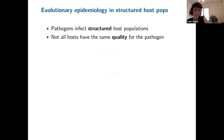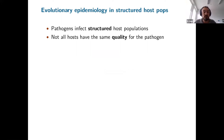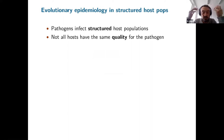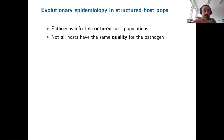My main motivation, because I'm interested in models of host-pathogen interactions and evolutionary epidemiology, is to use this idea of class structure to understand the evolution of pathogen traits. Pathogens, of course, infect structured host populations because not all hosts have the same quality for the pathogen.